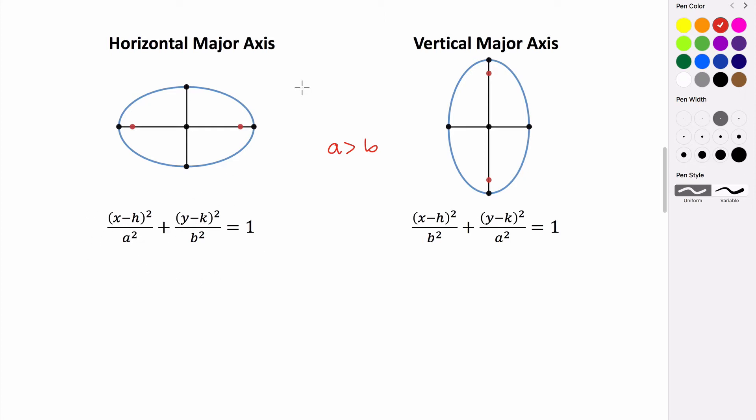The h and k in this case refer to the center, so the center is at h, k. a squared is just the distance from the center to the major axis vertex squared, and then b squared is just the distance from the center to the minor axis vertex squared. Ellipses are always equal to one, and we call this equation the standard form for an ellipse.